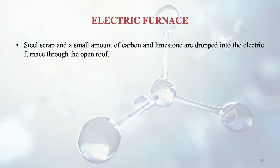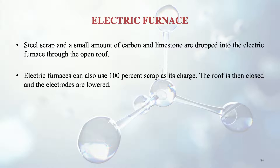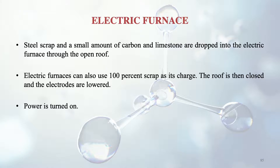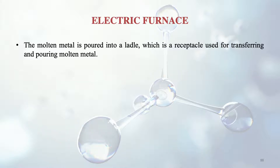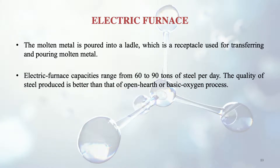Steel scrap and a small amount of carbon and limestone are dropped into the electric furnace through the open roof. Electric furnaces can also use 100% scrap as their charge. The roof is then closed and the electrodes are lowered. Power is turned on and the metal melts within 2 hours. The current is then shut off, the electrodes are raised and the furnace is tilted to pour the molten metal into a ladle. Electric furnace capacities range from 60 to 90 tons of steel per day.